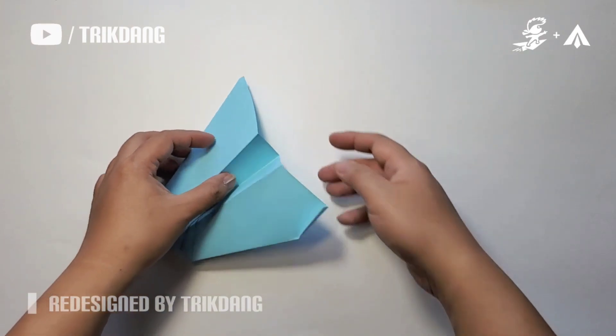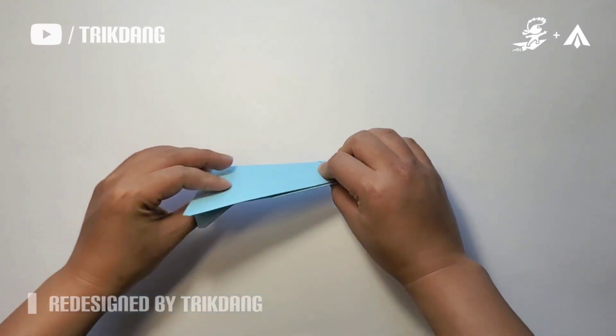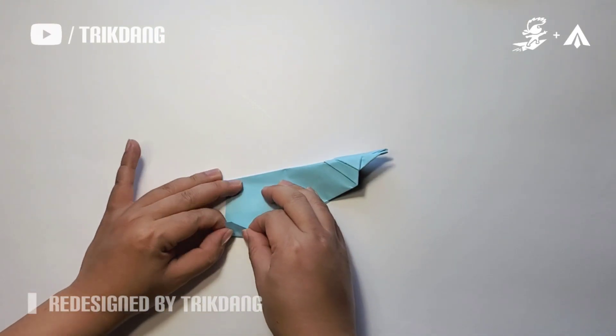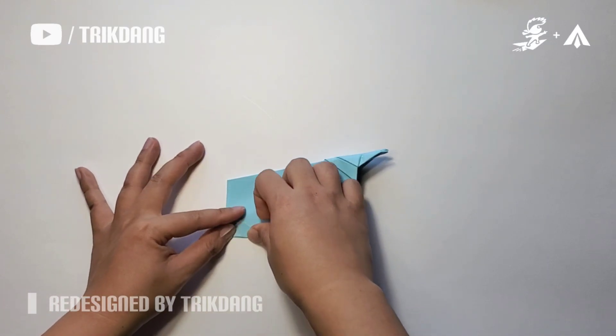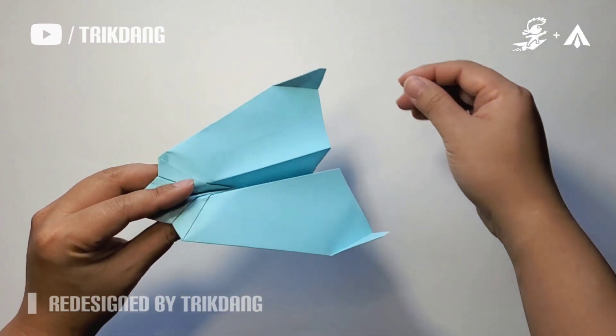I'm going to do the same thing for the other side. The easiest way is to fold the paper in half. Once you finish this side, repeat the same fold for the other side. Here we go. So guys, this is almost done.